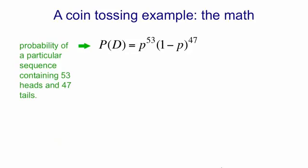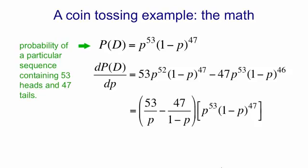So the probability of a particular sequence that contains 53 heads and 47 tails could be written out by writing down p every time you toss a head and 1 minus p every time you toss a tail. And then if we collect all the p's together and all the 1 minus p's together, we get p to the 53 and 1 minus p to the 47. If we now ask how does the probability of observing that data depend on p, we can differentiate with respect to p and we get the expression shown here. And if we then set that derivative to 0, we discover that the probability of the data is maximized by setting p to be 0.53. So that's maximum likelihood.